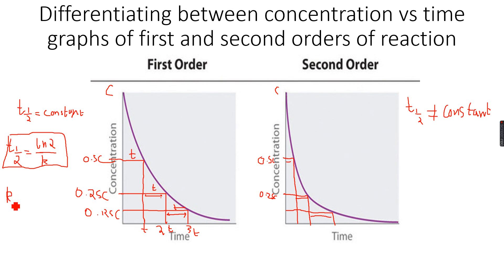And similarly, the rate constant can be calculated by just rearranging this formula. So this becomes ln2 over t half. So we can use this formula to calculate t half and the rate constant. And this is only for first-order reactions. This formula can only be used for first-order reactions because for second-order, t half is not constant.